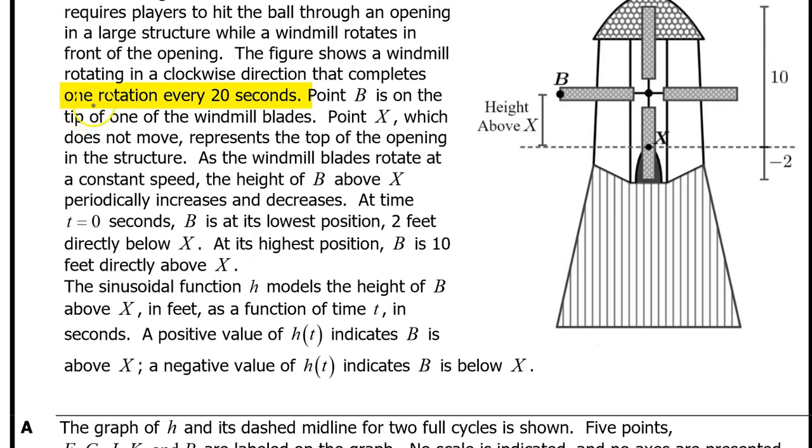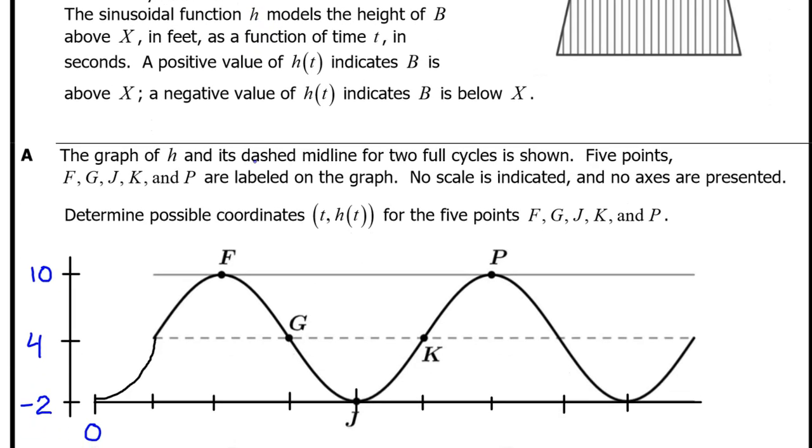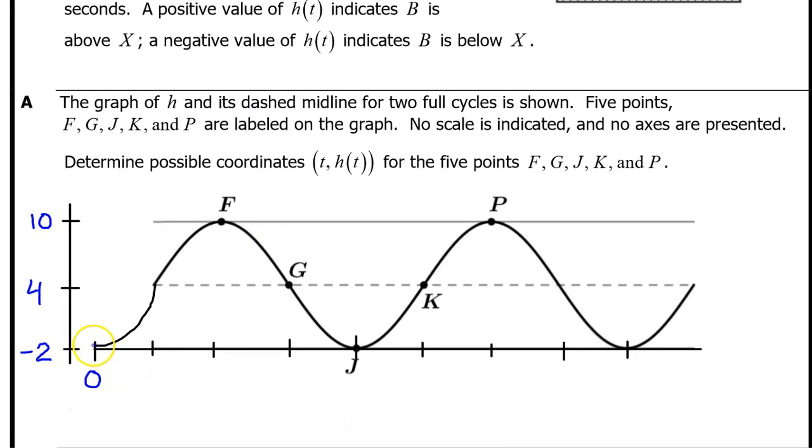The windmill completes one rotation every 20 seconds. Therefore, if it's at its lowest point at t equals zero, it will be at its lowest point again at t equals 20 seconds. Half of 20 is 10, and half of 10 is 5. So to find any remaining input values, we can just count by 5.